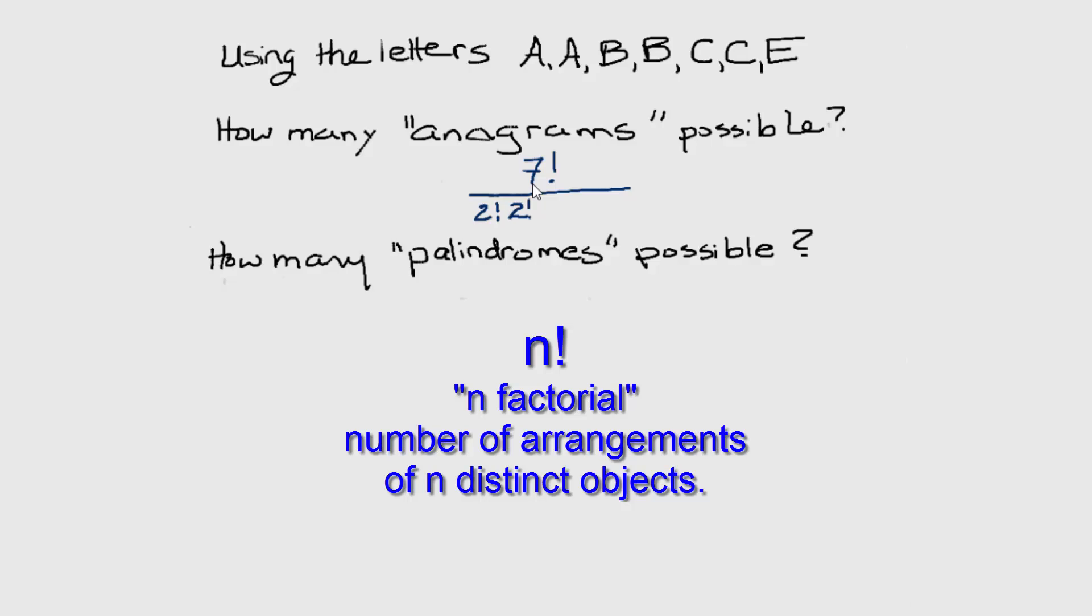Count the number of B's, divide by the number of arrangements of those letters, two factorial. The number of C's, two factorial. And the number of E's is one, but just for the sake of being consistent, we're going to say divide that by one factorial.